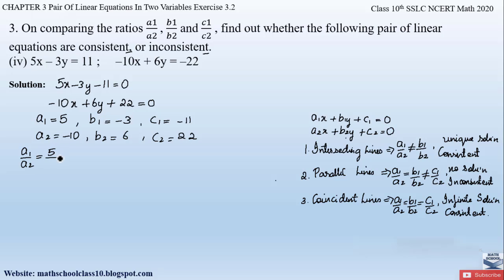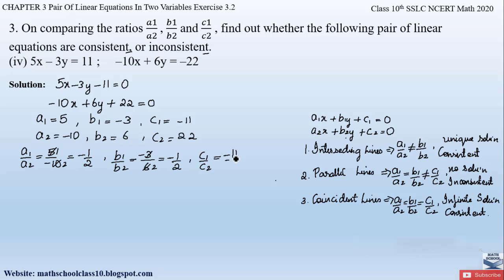Now let us find the values of the ratios. a1 by a2 is 5 divided by minus 10, which simplifies to minus 1 by 2. b1 by b2 is minus 3 divided by 6, which also simplifies to minus 1 by 2. And c1 by c2 is minus 11 divided by 22, which again simplifies to minus 1 by 2.